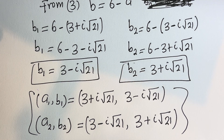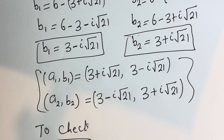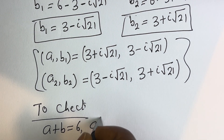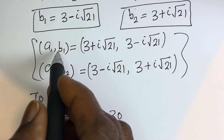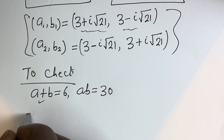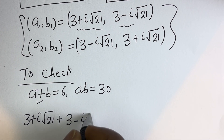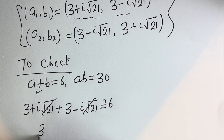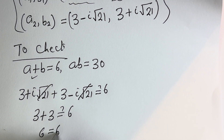We may check to confirm if this answer is right. To check, we have the given equations A plus B equals 6 and AB equals 30. Using A₁ and B₁: (3 plus i square root of 21) plus (3 minus i square root of 21) — the imaginary parts cancel — gives 3 plus 3 equals 6, which is true.